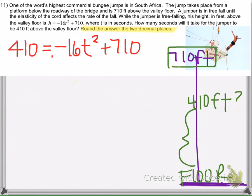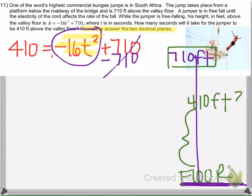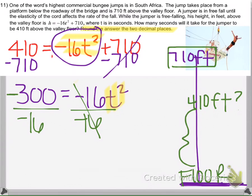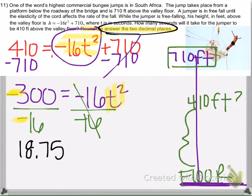When I look at this problem, I see there's only one term with a variable. When there's only one variable term, I can get the variable by itself and use the square root property. So I want T squared by itself — I'm going to subtract 710 from both sides, then divide by negative 16. Negative divided by negative gives a positive, so I get 18.75.